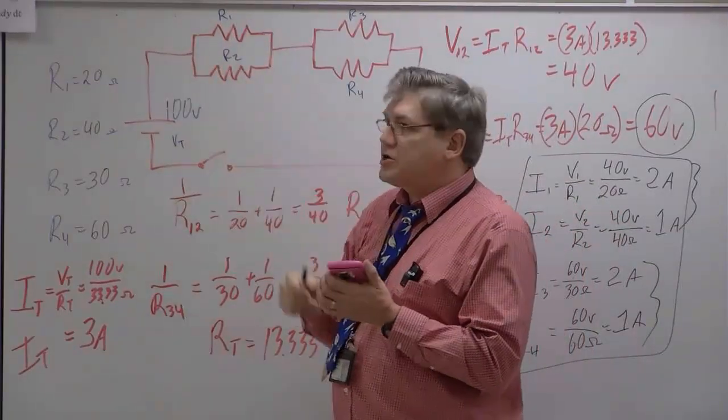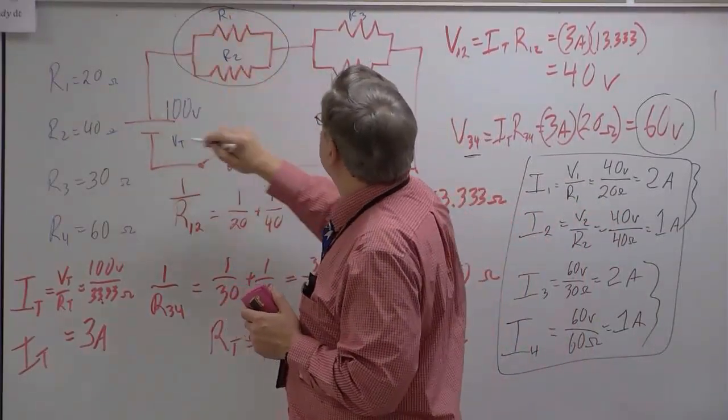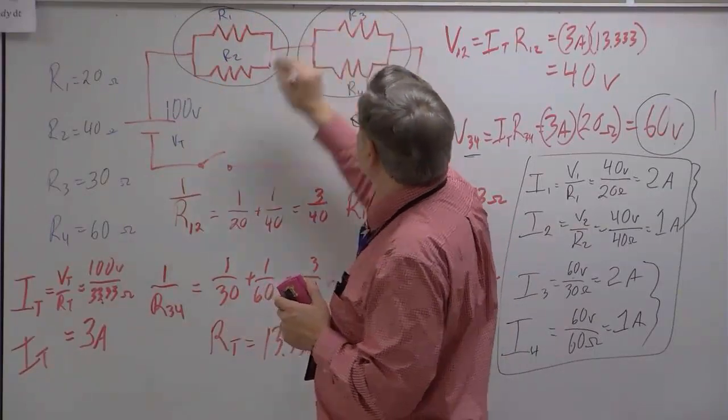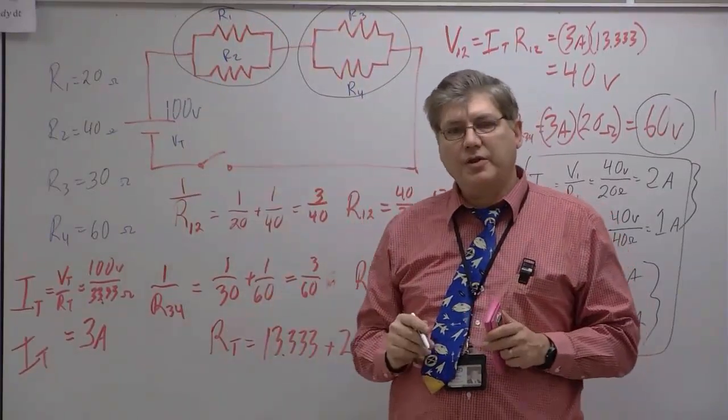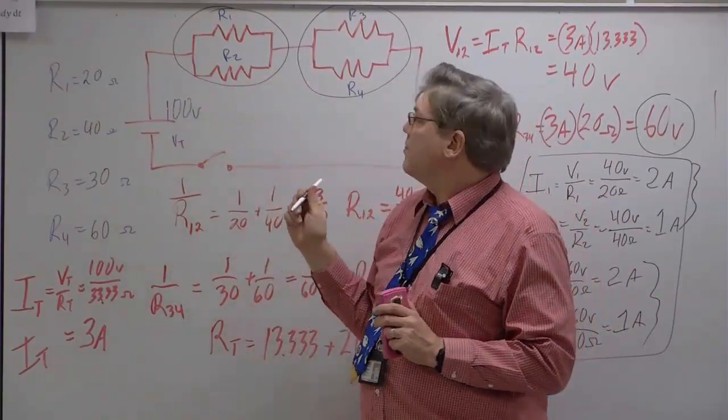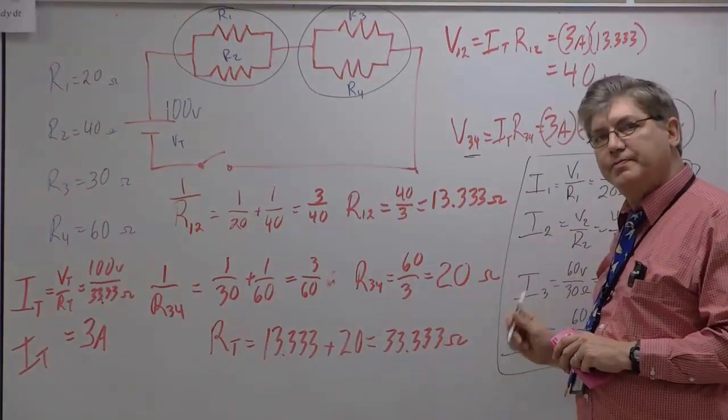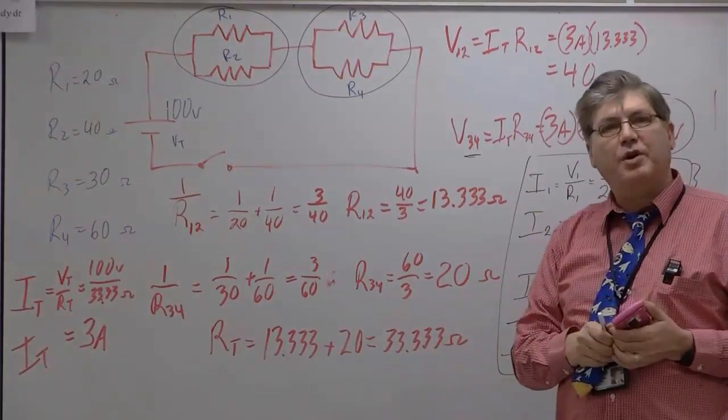And, again, the first thing we did was we solved to make this into a single series resistor, and this into a single series resistor, just so that we could get the currents and the voltage for the totals. And then we split them back apart when we went to get the individual currents. Hope this helps.